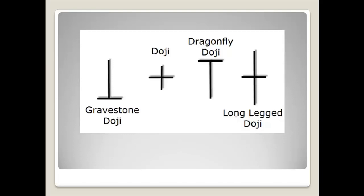If the market opened at 50, went up to 60, came down to 40, but at the end of the time frame closed at the same exact 50 rupees — the open price and the close price are equal — it is called a doji. Specifically when the open and closing price are equal with long upper and lower shadows, we call it a long-legged doji.